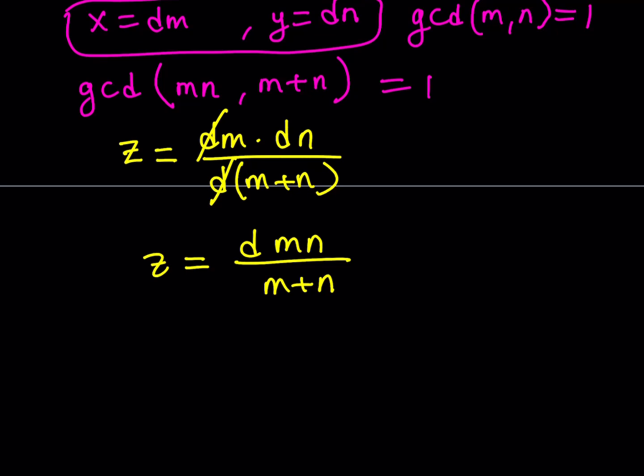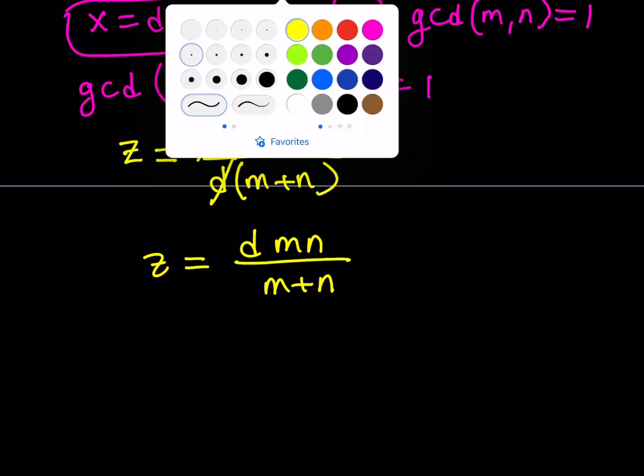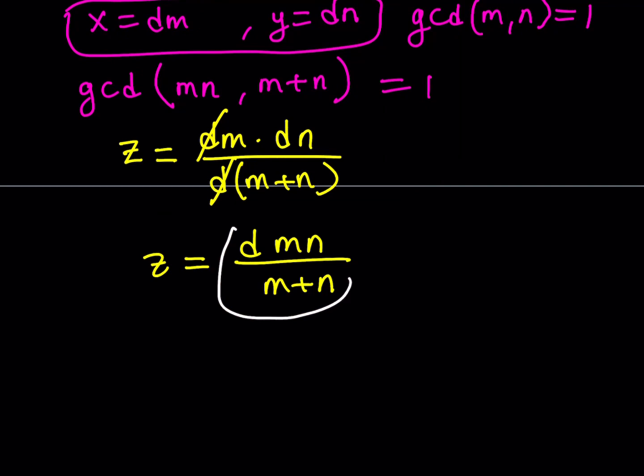Therefore, dmn divided by m plus n needs to be an integer, which means that d has to be divisible by m plus n. Does that make sense? Otherwise, we're not going to get an integer from here. Therefore, we can safely say that m plus n divides d.